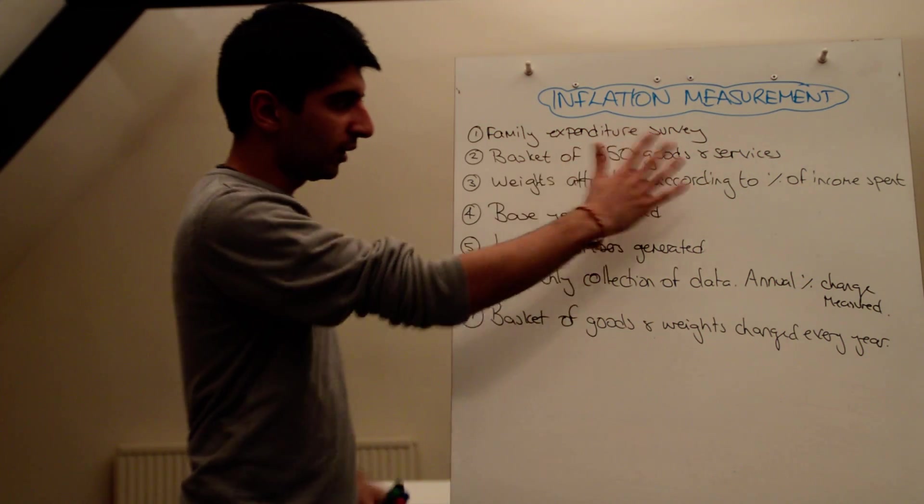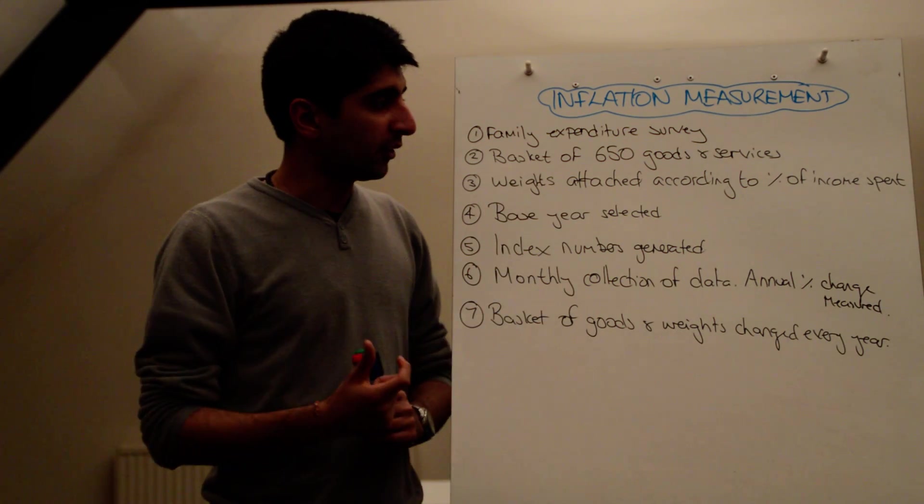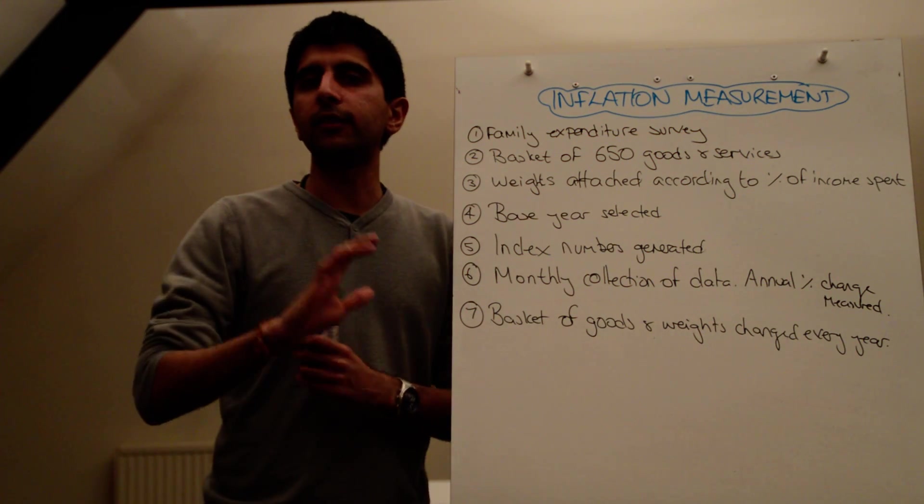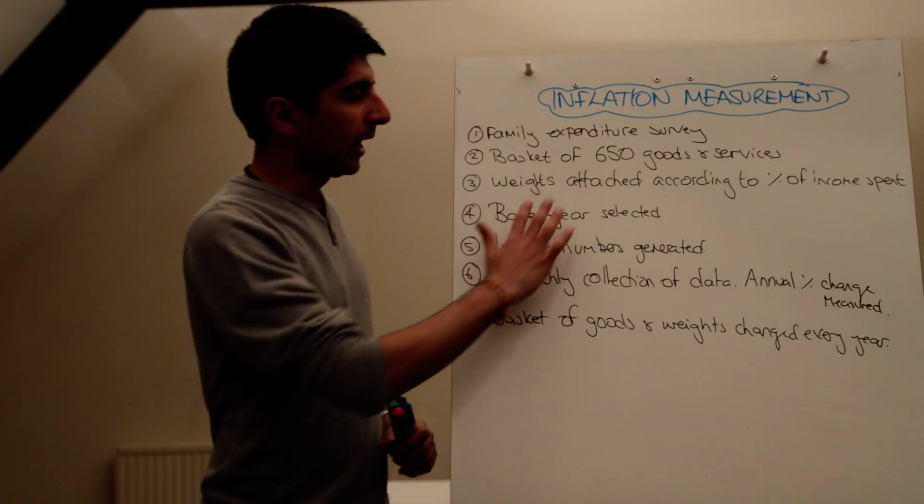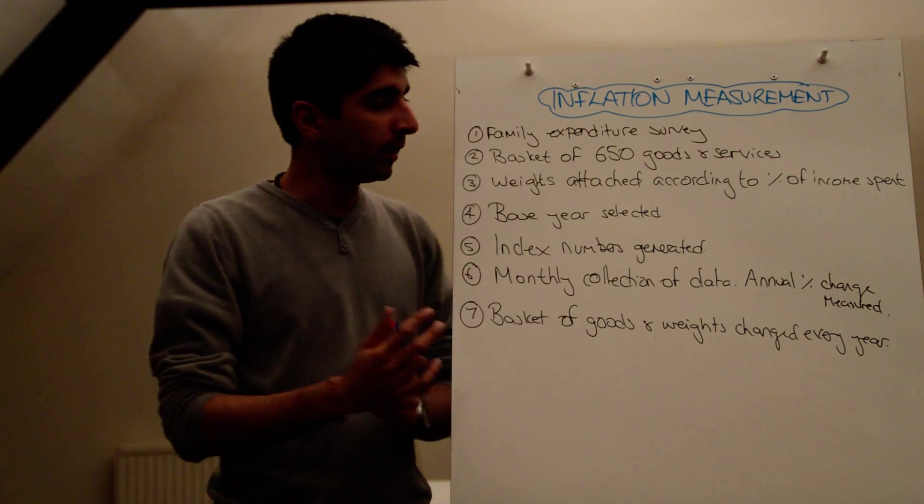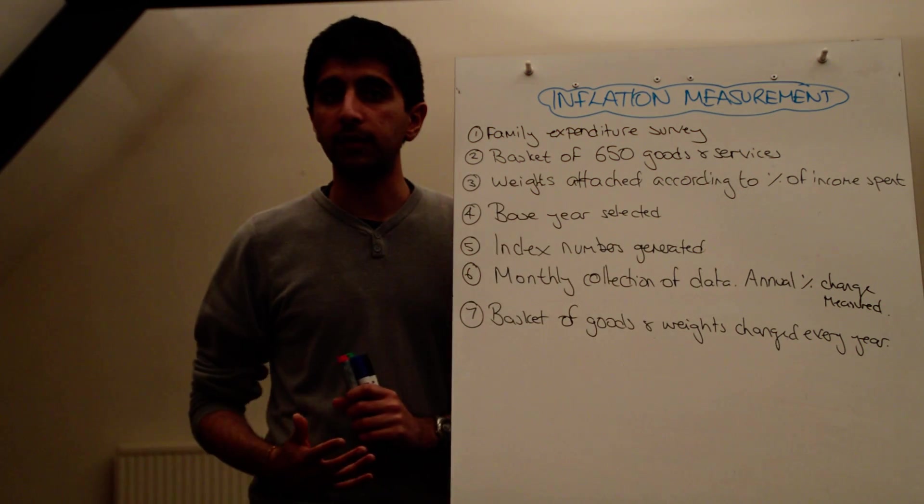So from that data, 650 goods and services are chosen. Weights are then attached to those goods and services. So if you want to consider it as a percentage. How important are those goods and services? And the way that's determined is, these people look at the percentage of income spent on these goods and services.